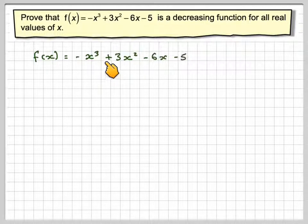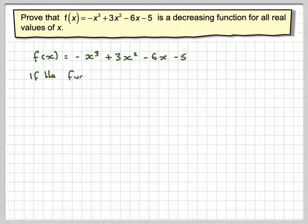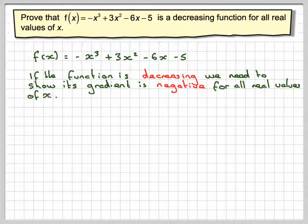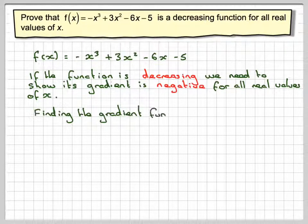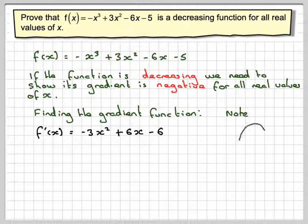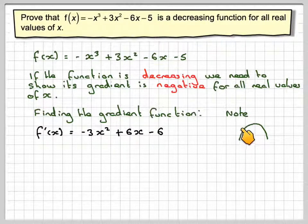So we've got f(x) = -x³ + 3x² - 6x - 5. If the function is decreasing, we need to show its gradient is negative for all real values of x. Finding the gradient function means we differentiate: f'(x) = -3x² + 6x - 6. Because it's -3x², the parabola opens downward.